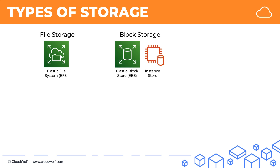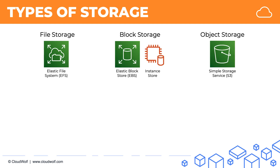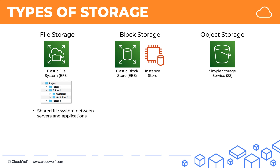So here we've got file storage, block storage and object storage. You'll see right away that both Elastic Block Store and Instance Store are part of block storage. Starting with file storage: the Elastic File System is very similar to file storage that you have on your computer, whether it's Windows, Mac or Linux. In the cloud this file system is shared between servers and applications and is also managed for you. As on your computer there's hierarchical storage, there's folders and subfolders, and the benefits are that it's simple, convenient and it has a low cost.